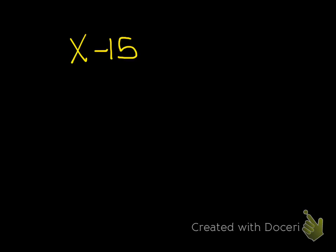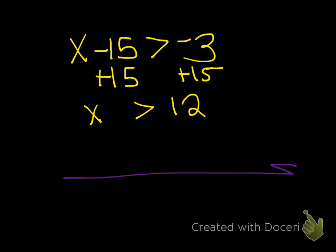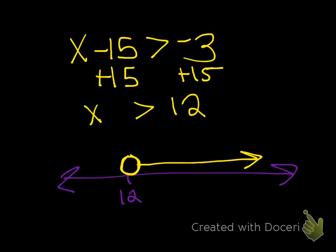Number 9: we have x minus 15 is greater than negative 3. We solve it like an equation — plus 15, plus 15 — so x is greater than 12. If you graph that on a number line, here's 12. Since it's greater than but not equal to, you do an open circle, and then it goes that way to the right.